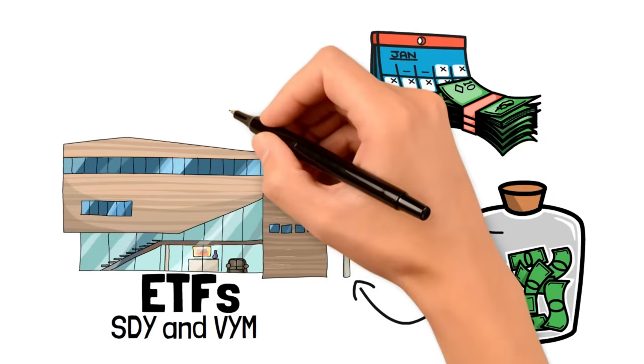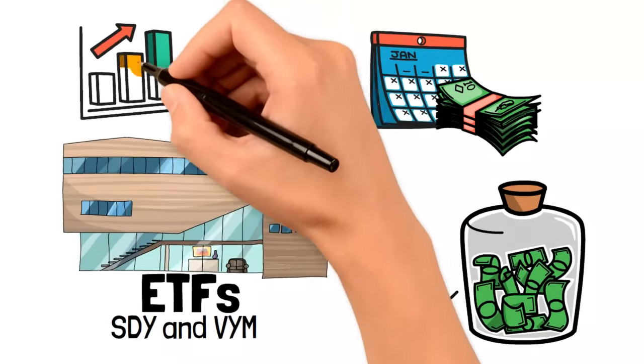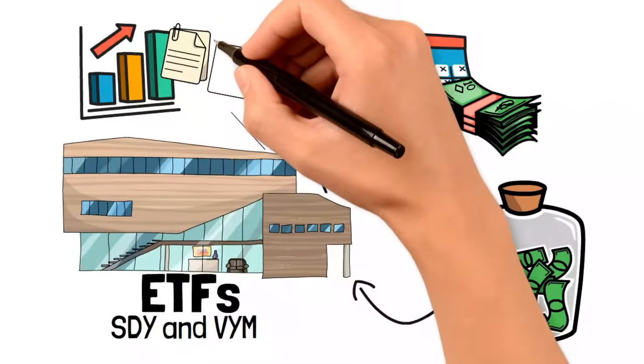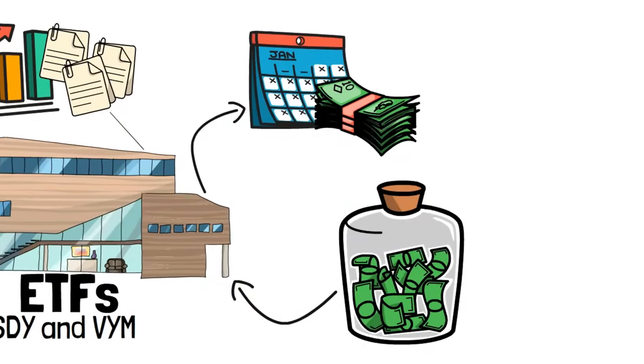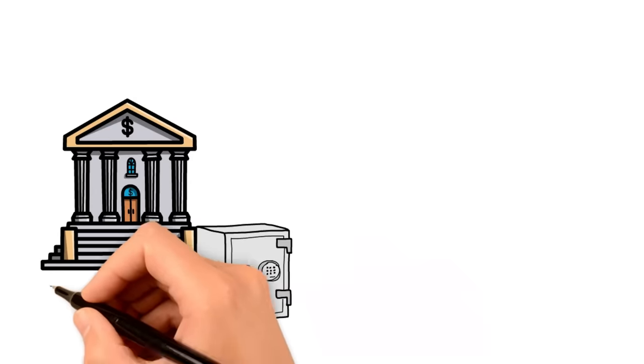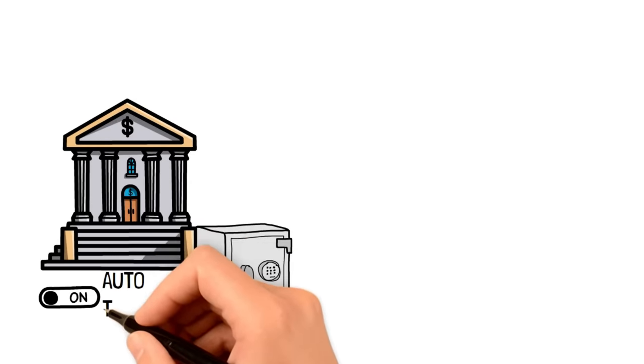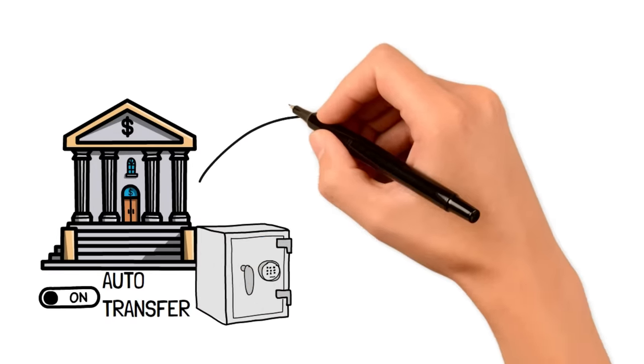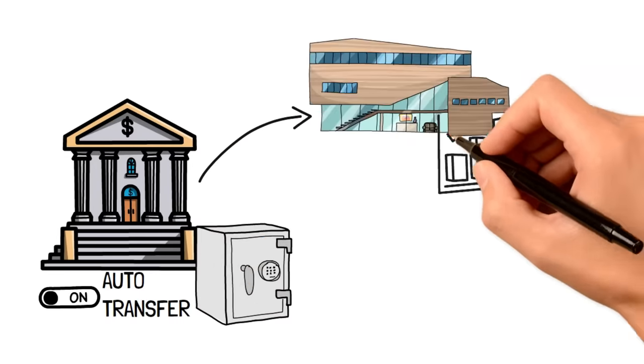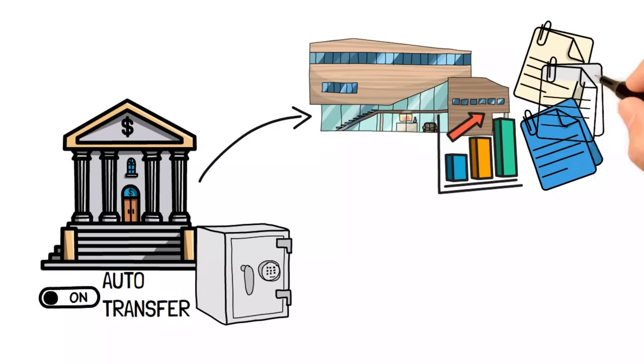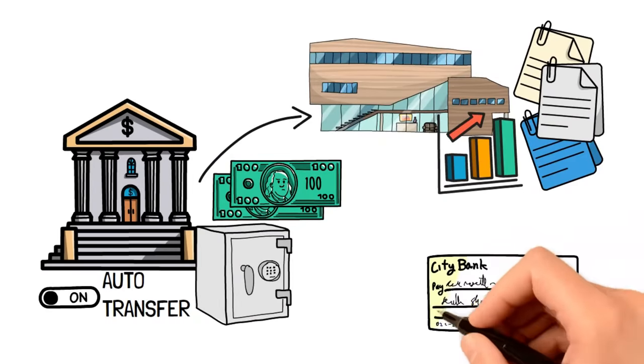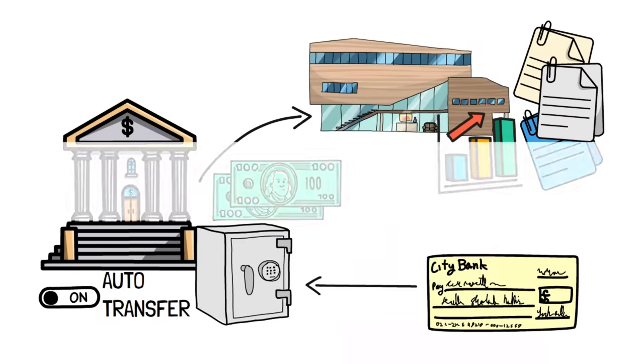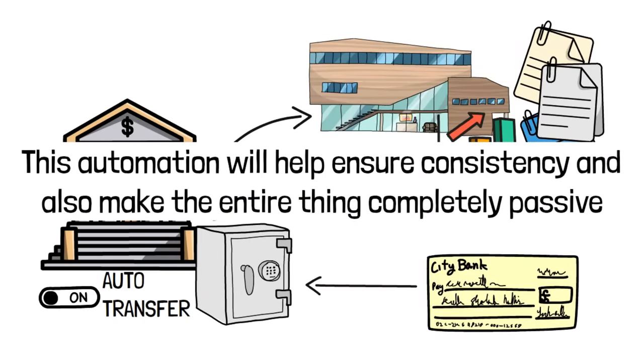Now that you know how to invest, my advice is that you create an automated system so that anytime money enters your account, part of it is automatically diverted to your index fund. For instance, you can set up a system that automatically deducts $200 to your stock broker account every month when you receive your salary or income. This automation will help ensure consistency and also make the entire thing completely passive.